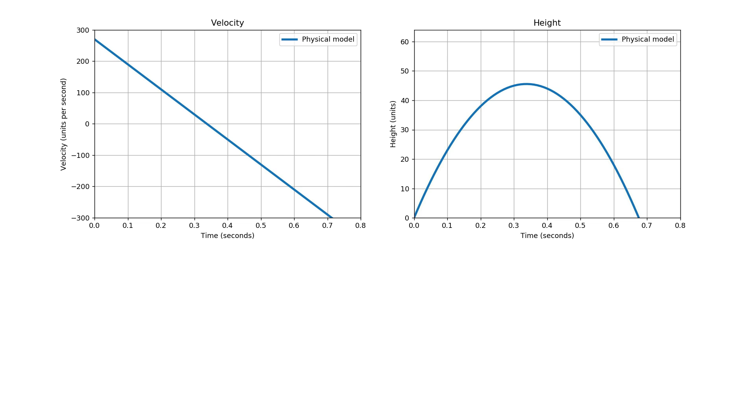Another way of thinking about this is in terms of the velocity as shown on the left hand side. The velocity starts at 270 units per second, the jump velocity in Quake 3, and then decreases at a constant rate. This rate corresponds with the acceleration due to gravity, 800 units per second per second.